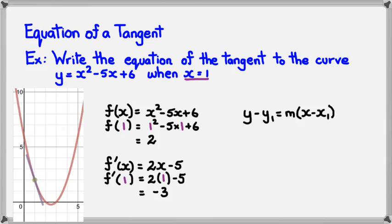So I'm going to use this one here. I already know what m is. That's the gradient, which is -3. And I know what my point is, which is (1, 2). So I've got y - y₁, that's the y coordinate, which is 2, equals m, which is the gradient, which is -3, multiplied by x - x₁, which is the value of x in this case, 1.